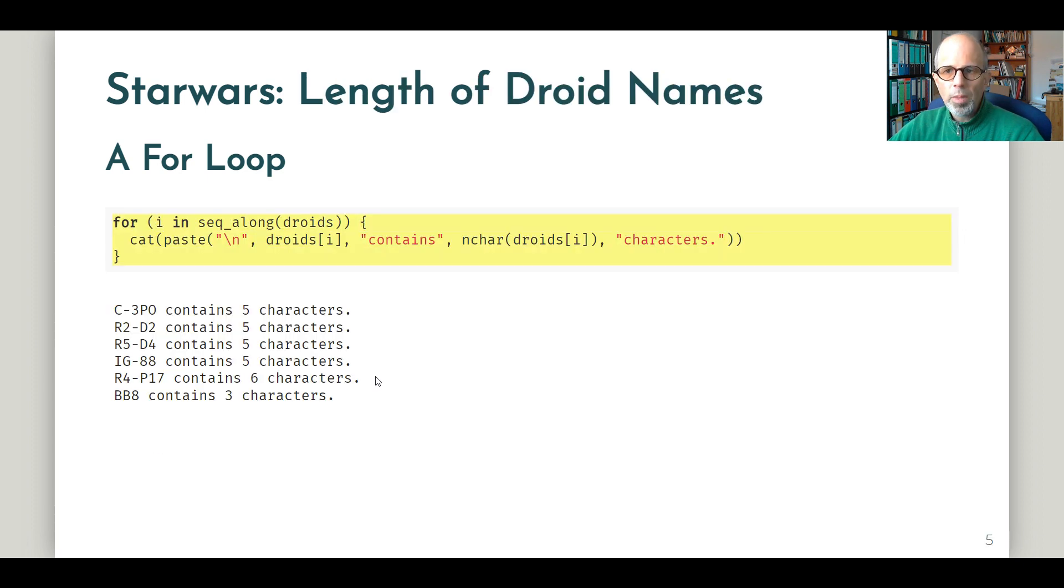We can inspect that and print the number of characters to the screen. Again, I'm using a for loop with the iterator i. Then I have this paste function to paste together my result sentence, putting the name of the droid and using the nchar function to find out the number of characters in each name.